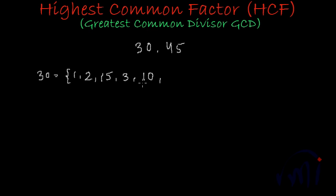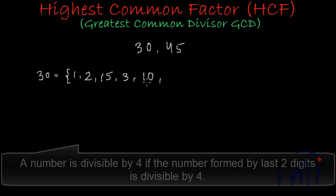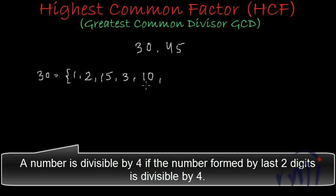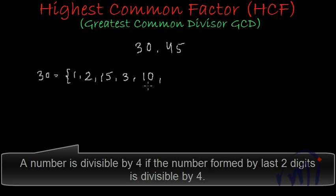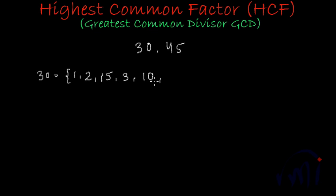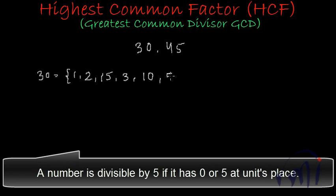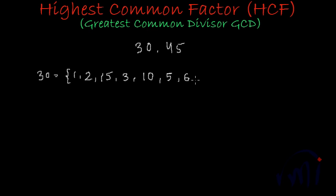Is 30 divisible by 4? Using the divisibility rule of 4: if the number formed by the last two digits is divisible by 4, then the number is divisible by 4. We check — 4 sevens are 28 and 4 eights are 32 — so 30 is not divisible by 4. But it will be divisible by 5 because it has 0 at units place, and 5 sixes are 30. Also, 30 is divisible by 6 because we already found 6 as a factor.